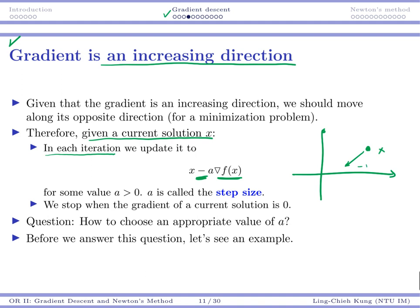So this is the opposite direction of our gradient at the particular value x, for some value a, which is positive. So a is called the step size. We would stop when the gradient of a current solution is zero. So now the question is, how may we choose an appropriate value of a?